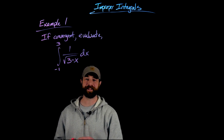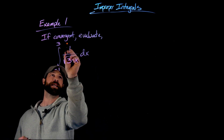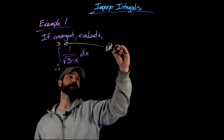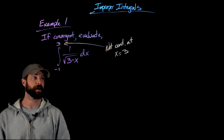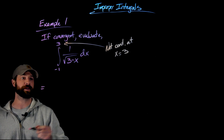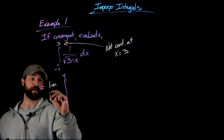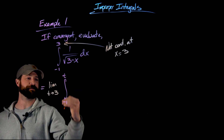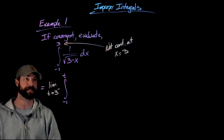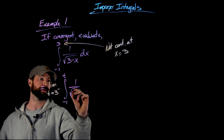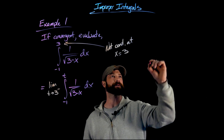In this first example, we're looking to integrate 1/√(3 - x) on the interval from -1 to 3. The issue is here at this upper limit: because of the zero we get in the denominator, this function is not continuous at x = 3. So what we're going to do is set up our limit definition: we'll integrate from -1 to t, and take the limit as t approaches 3 from the left, going from the left-hand side inside this integral rising up to t.